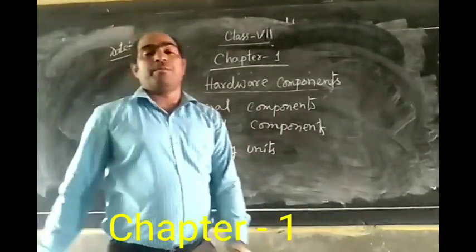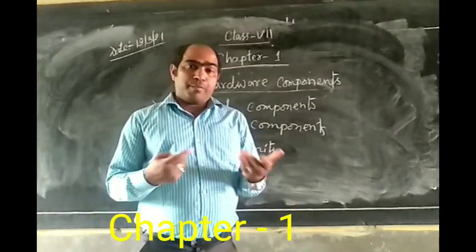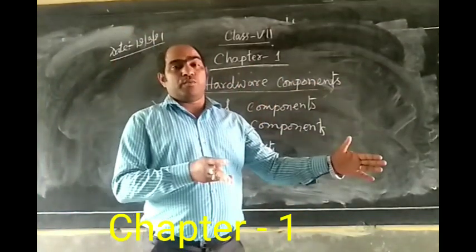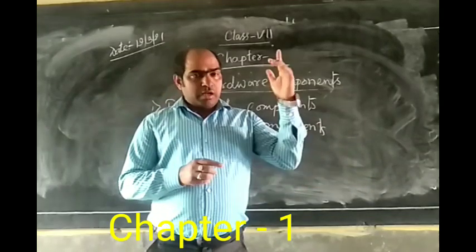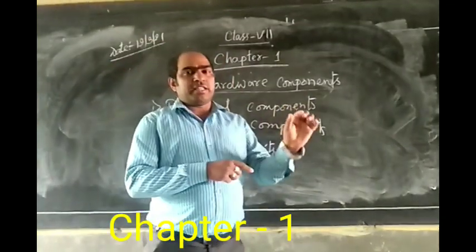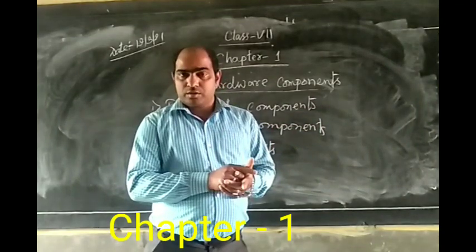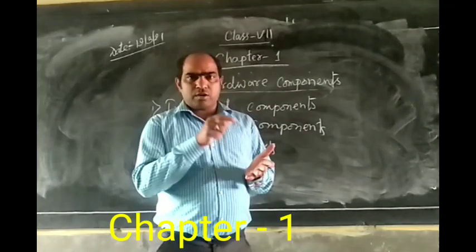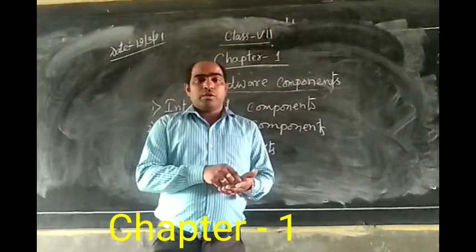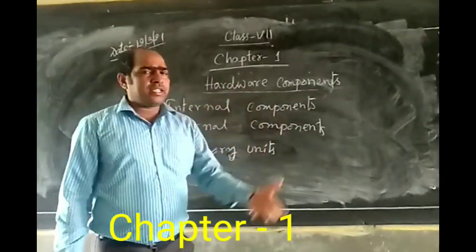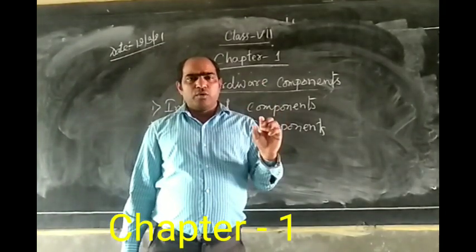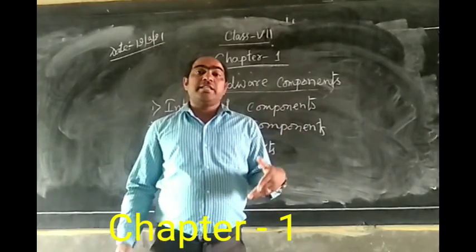Which are the internal components of the computer? Internal means obviously inside — inside the CPU. The CPU is the main part of the computer. Inside the CPU, many things are there. The main thing is the motherboard. Motherboard is there, RAM is there, ROM is there. Nowadays, inbuilt there — modem also, wireless also. Many things are inbuilt inside the CPU. Hardware inside the CPU, whatever they are, those are our internal components.